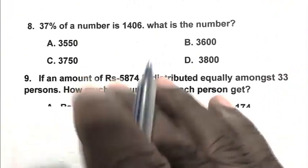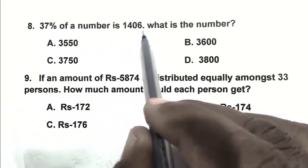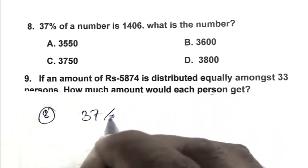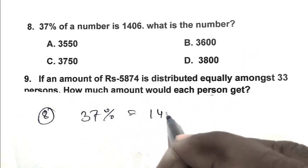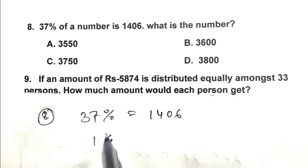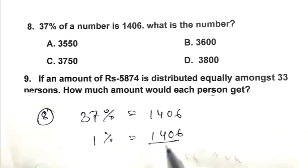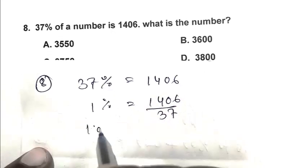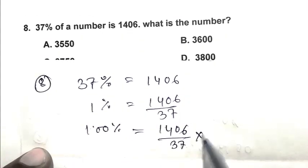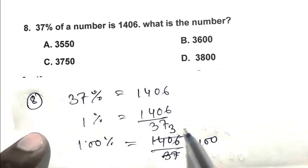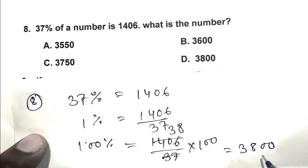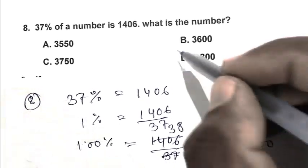Question number 8. 37 percent of a number is 1406. What is the number? So 37 percent equal to 1406. 1 percent equal to 1406 upon 37 and 100 percent equal to 1406 upon 37 multiplied by 100. That is 3800. So D is the right answer.